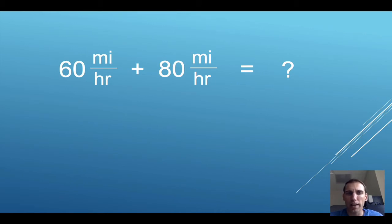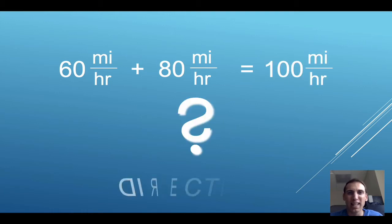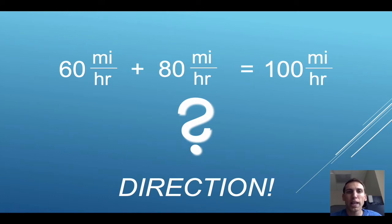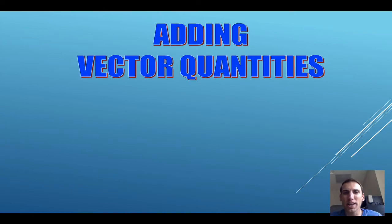If I asked you all to quickly, in your head, add 60 miles an hour to 80 miles an hour, most of you would not say that the answer is 100 miles an hour. The reason why this answer could be 100 miles an hour is because of the directions of these velocity vectors. Adding vector quantities isn't as neat and straightforward as adding scalar quantities.